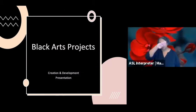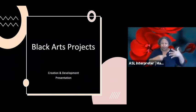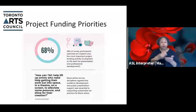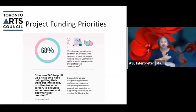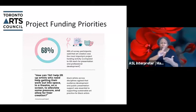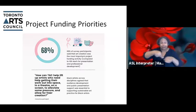Under the project stream, the first component is creation and development, which will have a rolling deadline — meaning applicants can apply at various points throughout the year. Going back to the co-design process, 68% of survey participants said that art creation in any discipline was the most important project funding activity. One participant asked: 'How can TAC help lift up artists who need help getting their work out — into a theater, on a screen — to alleviate some pressure and allow for freer creation?'